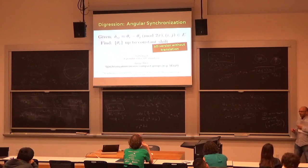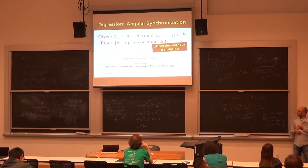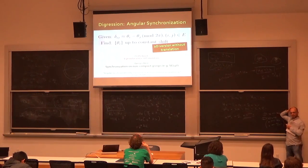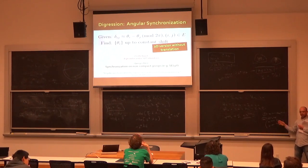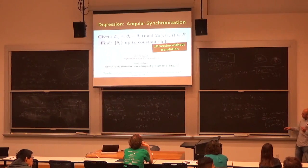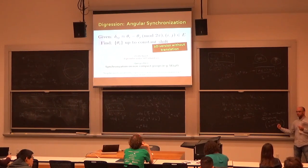For 3D rotation synchronization, the unknowns are R_i ∈ SO(3) and the input data are R_ij ≈ R_j R_i^T. The SDP relaxation extends naturally: instead of a scalar outer product zz*, the unknown matrix has 3×3 block elements R_i R_j^T. The diagonal blocks are 3×3 identity matrices. The matrix still looks like MM^T where M stacks all the R_i's, so its rank is 3 rather than 1.